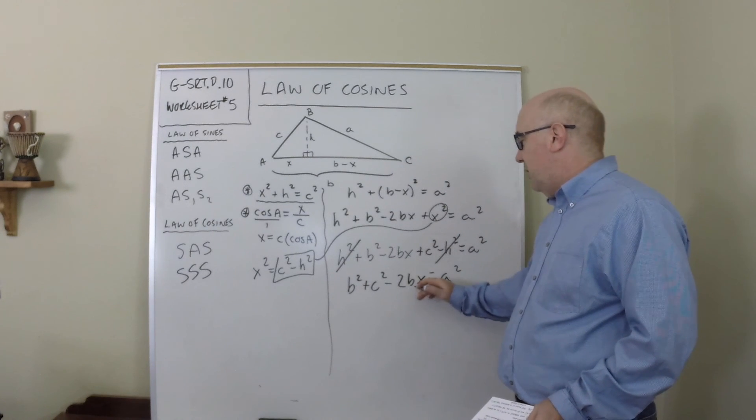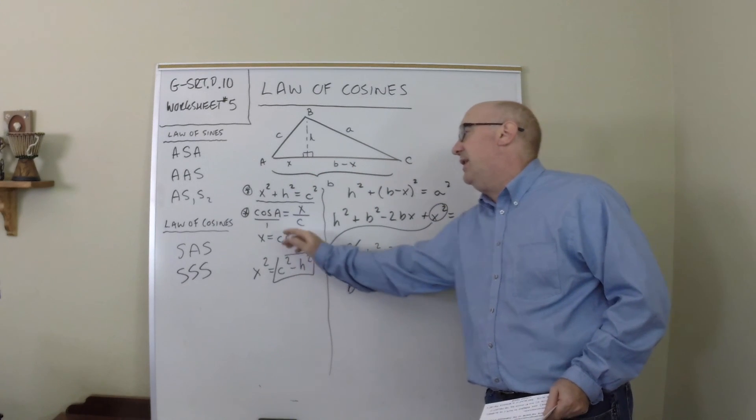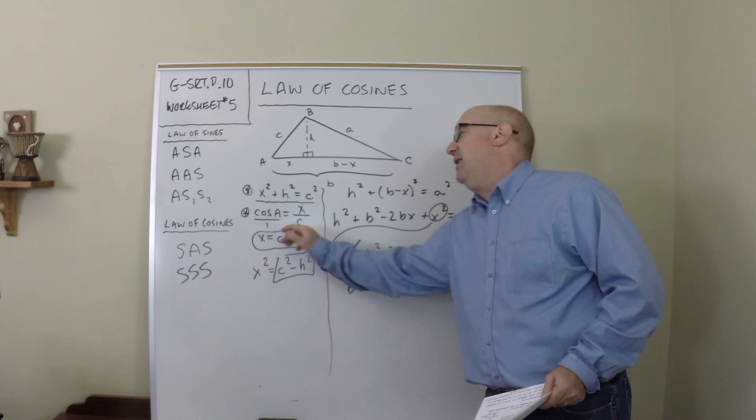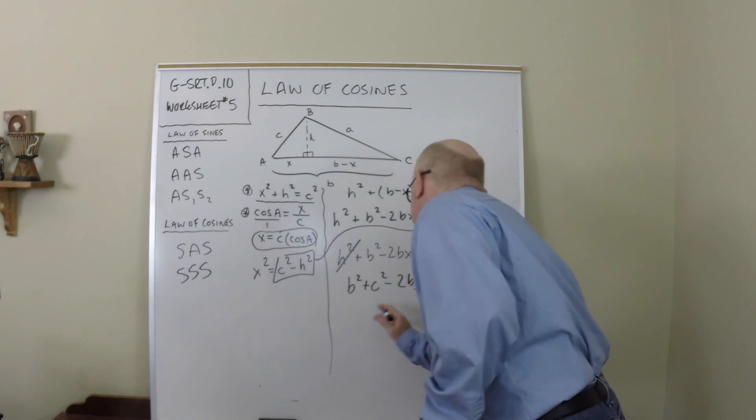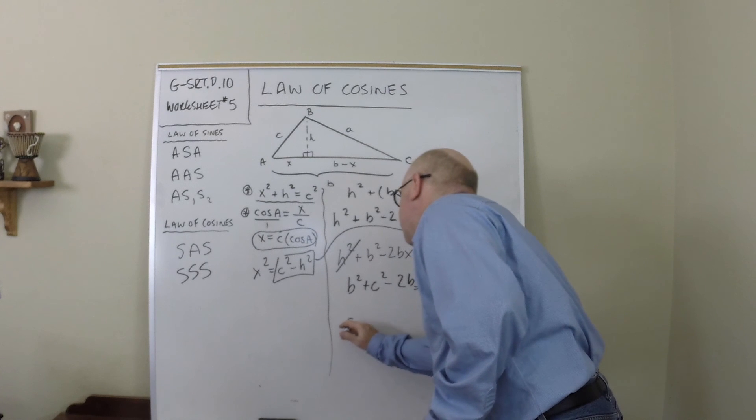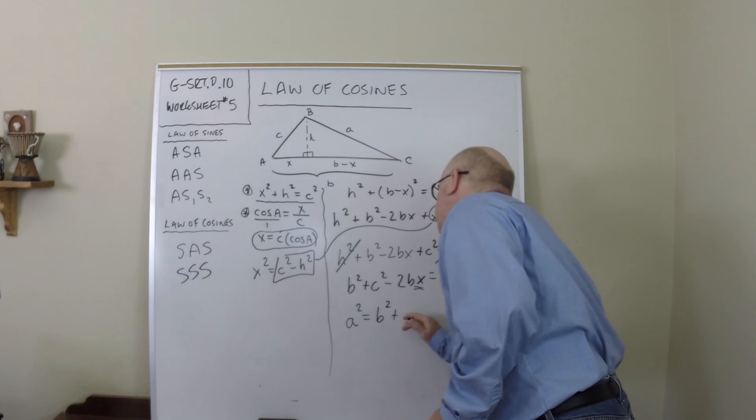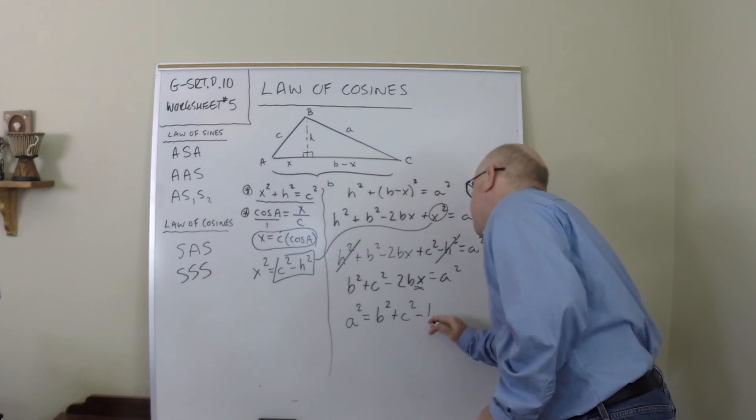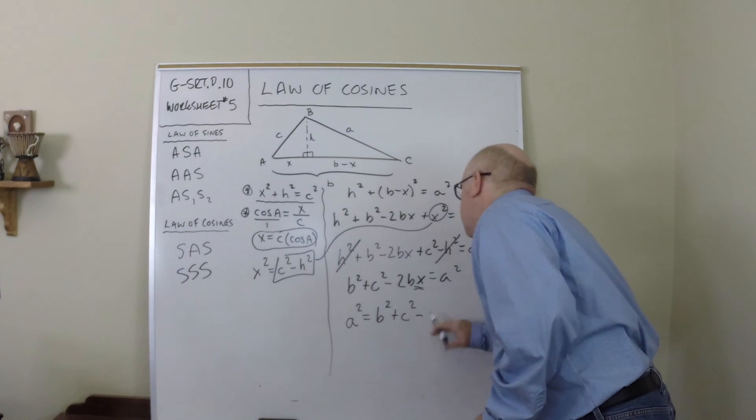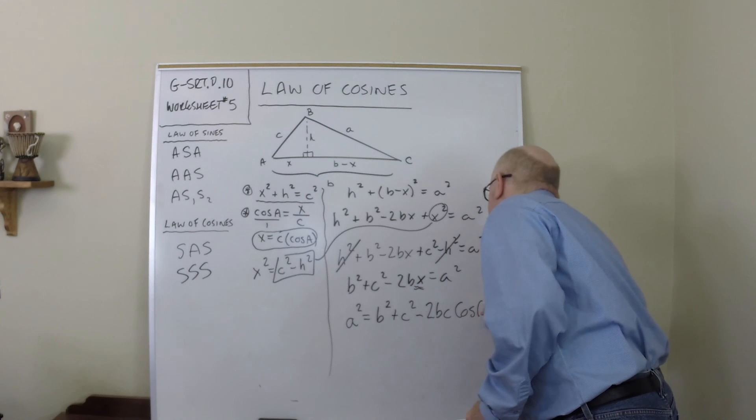This x though doesn't help us out. I don't want to use the x, but I notice over here that x equals c times the cosine of a. And so let's write this out. I'm going to write my a squared on this side because I'm almost done. b squared plus c squared minus 2bc cosine of a.